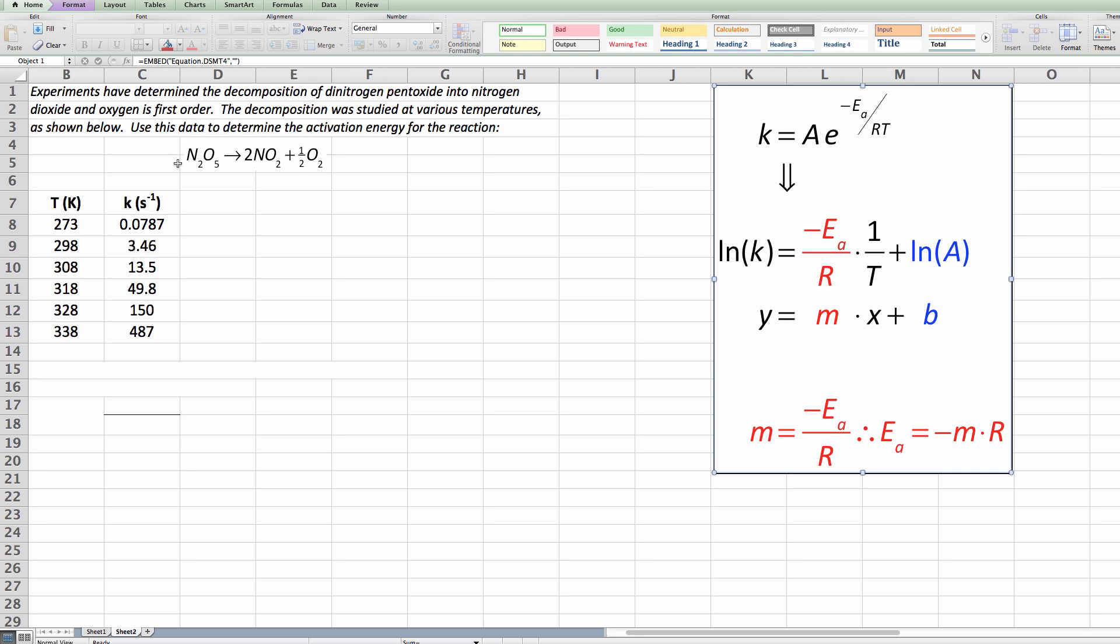Here's a reaction that we're going to be looking at in this particular case, which is the unimolecular decomposition of dinitrogen pentoxide, and you're told in the problem here that it's first-order. The goal? Determine the activation energy for the reaction.